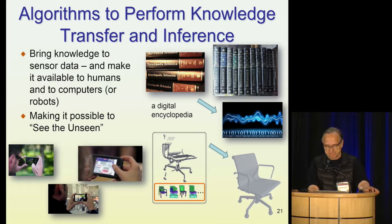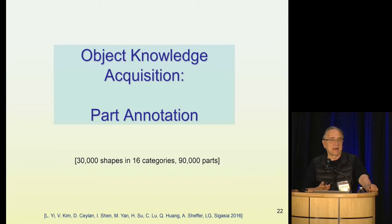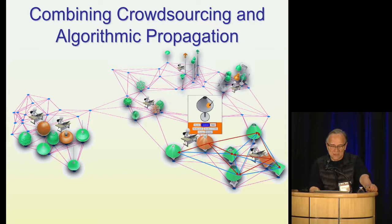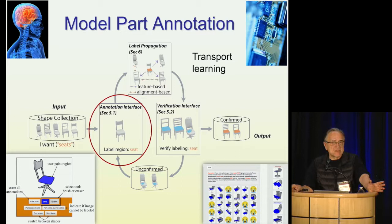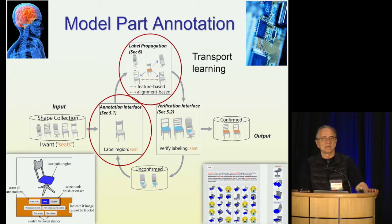I'll show how we annotated a small part of ShapeNet using a combination of crowdsourcing and algorithmic propagation. We take chairs as a class of objects. Chairs have certain well-defined parts — for example, a seat. We ask humans to annotate seats for certain chairs in 2D views of 3D models. Then we have various ways to propagate information to other chairs using many different kinds of transport mechanisms. Part of this effort is to learn what types of transport mechanisms work best for what types of data.